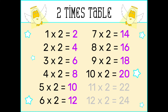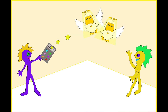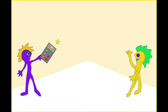Ten times two is twenty. Eleven times two is twenty-two. Twelve times two is twenty-four.